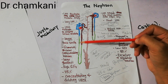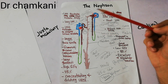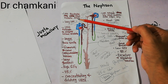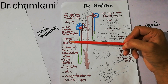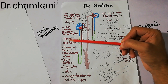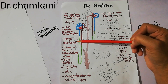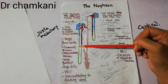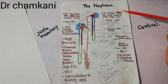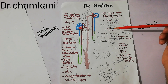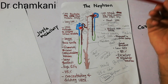The juxtamedullary nephron has a long loop of Henle while the cortical nephron has a short loop of Henle. Another difference between the juxtamedullary and cortical nephron is that there is a large vasa recta in the juxtamedullary nephrons, while there is a reduced vasa recta in the cortical nephron.